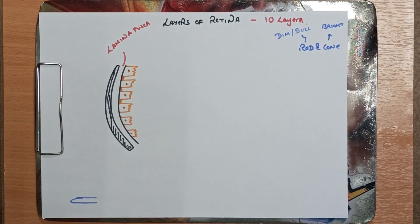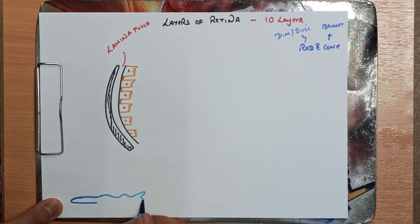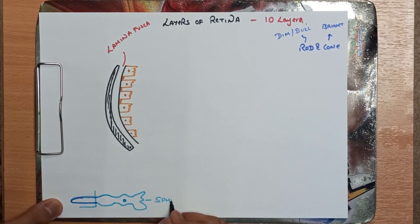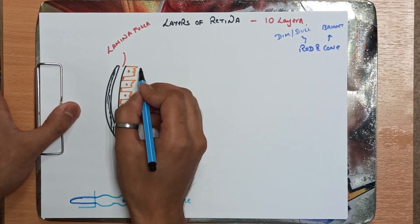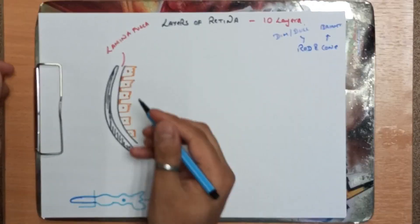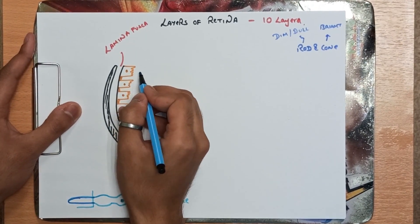The rod and cone cells consist of two parts. This part is called the outer segment, whereas this is the inner segment — here lies the nucleus. The end of the rod cell is called the spherule. First I'll tell you the structure, then I'll quickly tell you about all ten layers.